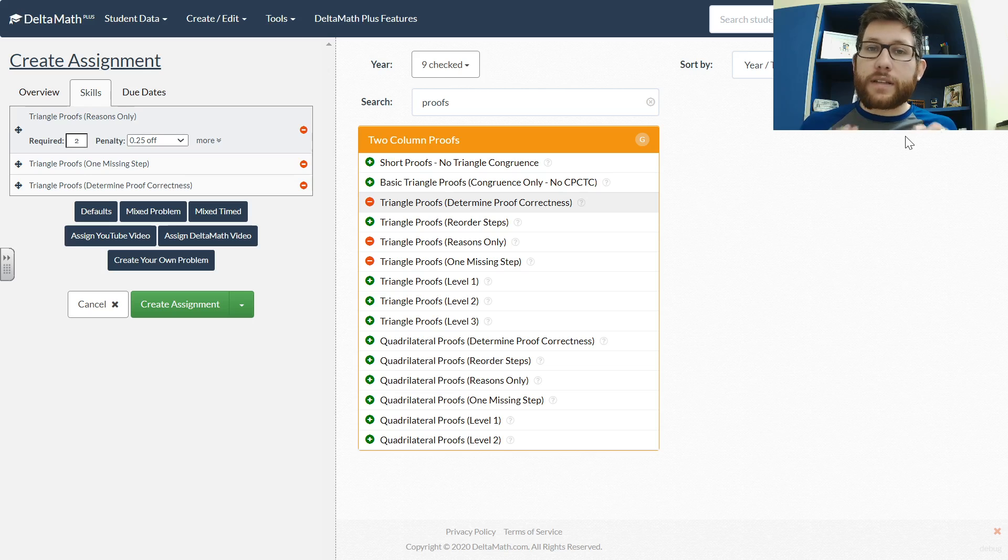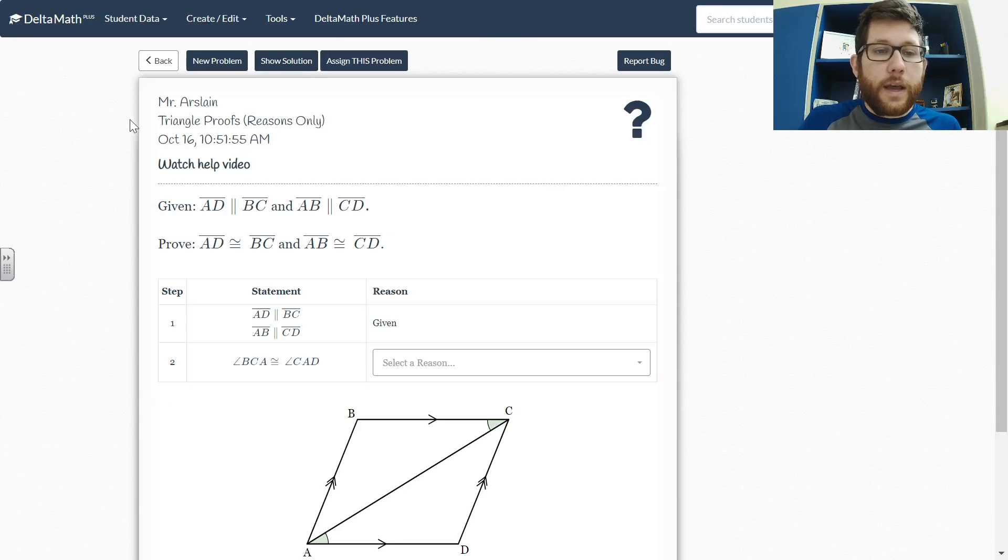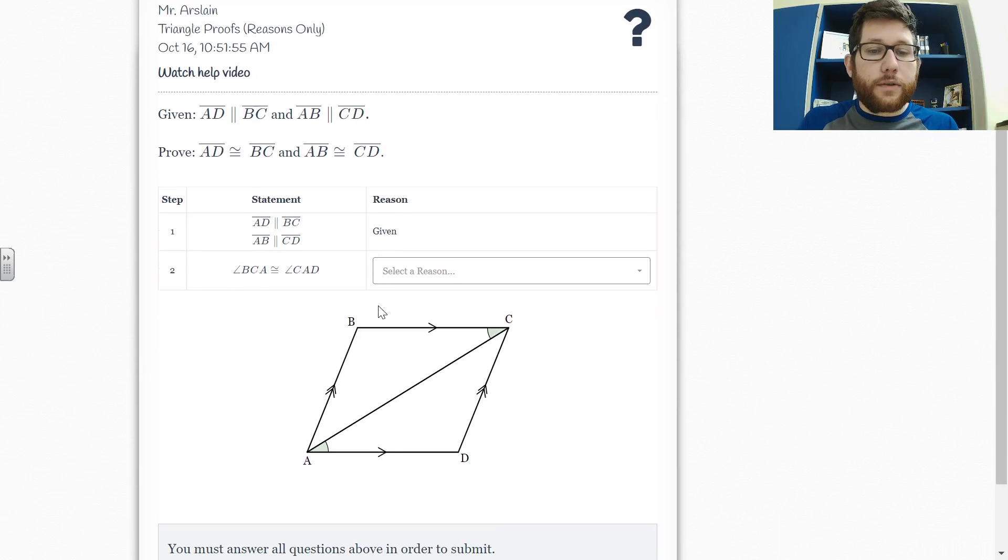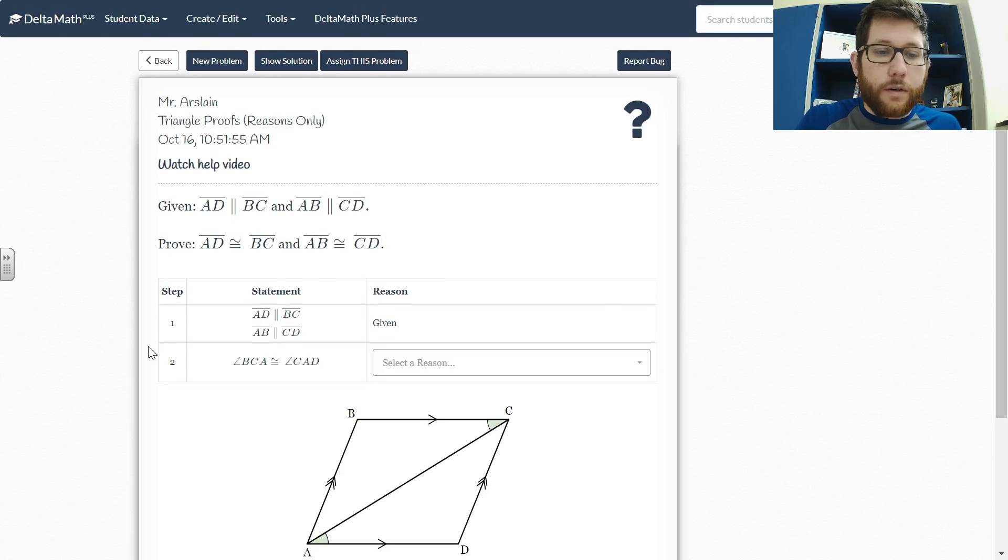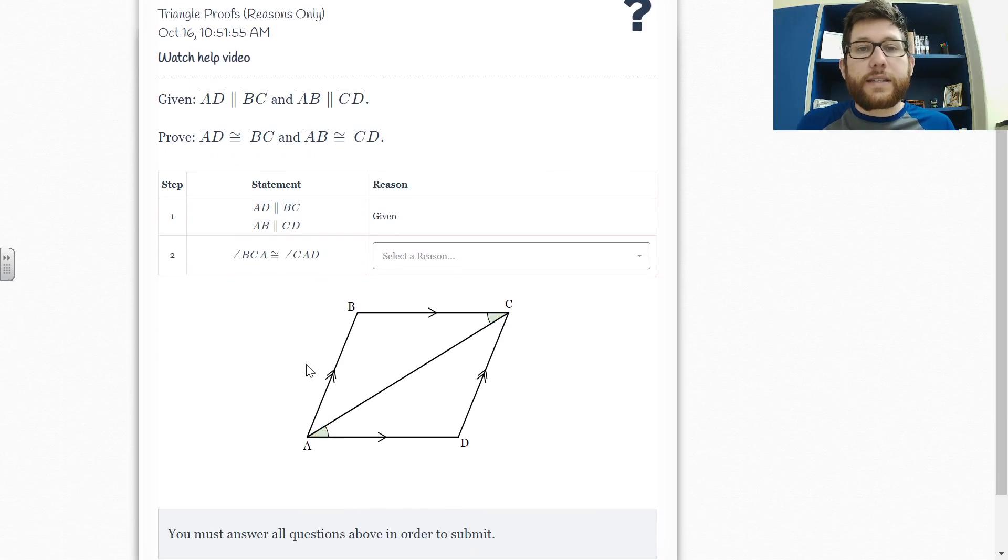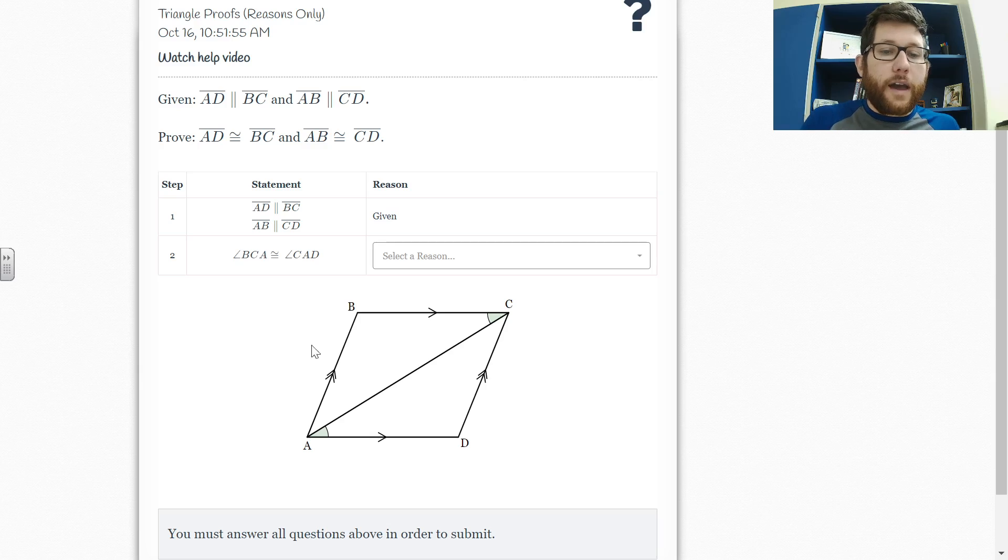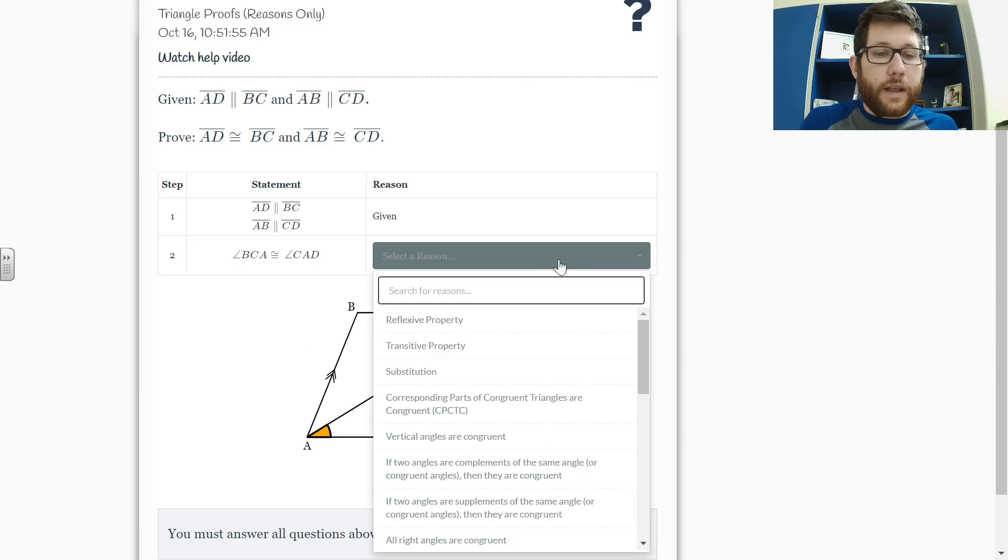So what I want to do is expose you to some different proofs, some more complicated proofs. But I don't think that you're necessarily ready to do these really complicated proofs on your own. So instead we've assigned you some problems that deal with the complicated proofs but provide some help along the way. So there's three assignments here, three pieces. The first one is reasons only. So they're going to walk through some proofs like this one that aren't too bad.